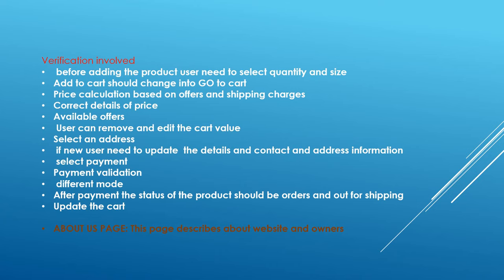Correct details of price, available offers, user can remove and add items in the cart. Selecting an address — if a new user needs to update contact and address information, that prompt has to come. Select payment, payment validations, different modes of payment. After payment, the status of the product should be 'Ordered' or 'Out for Shipping', and the cart value should be updated to zero. There is also an About Us page that describes the website and its owners.